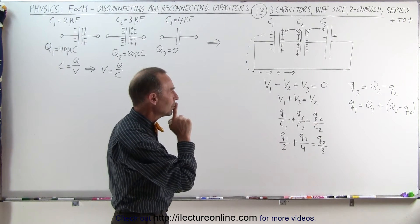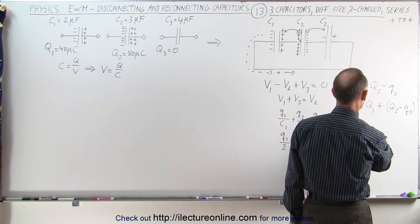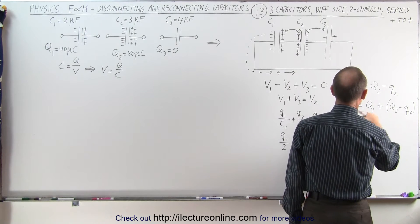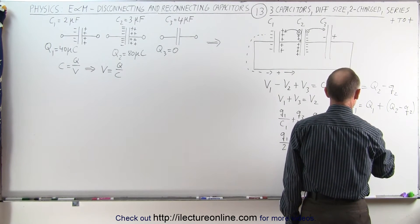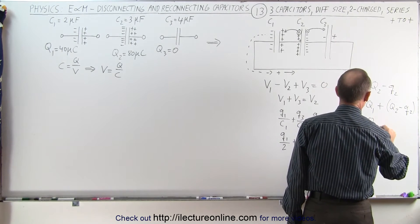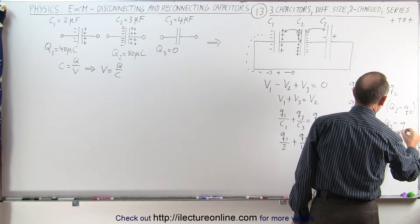Now what we need to do is write Q2 in terms of Q1. Q2 is equal to, when we bring this across, big Q1 plus big Q2, and bringing this Q1 across minus small Q1. And of course, these two charges together, notice that's 40 and 80 microcoulombs. Together that's 120.